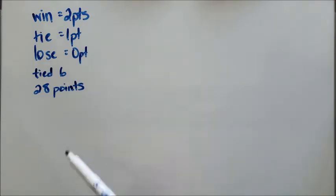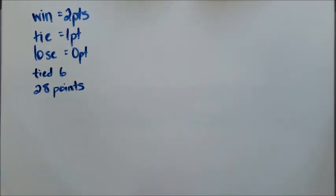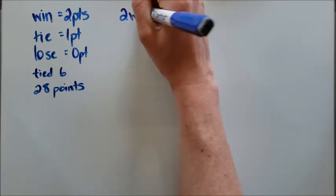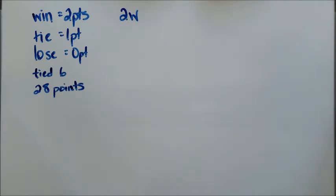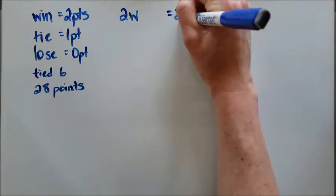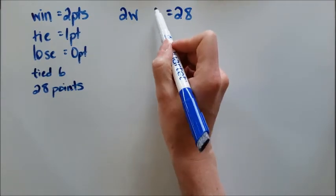And so I need to think about this in terms of what is my equation going to look like. So when I think about this, I know that I'm going to get two points for every win. And they did win some games. So that means two times however many games they won. I know that overall they have 28 points.